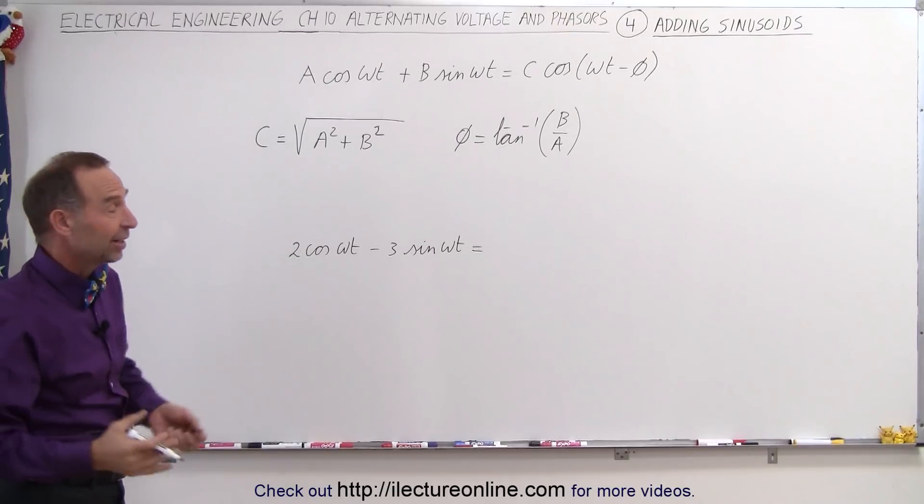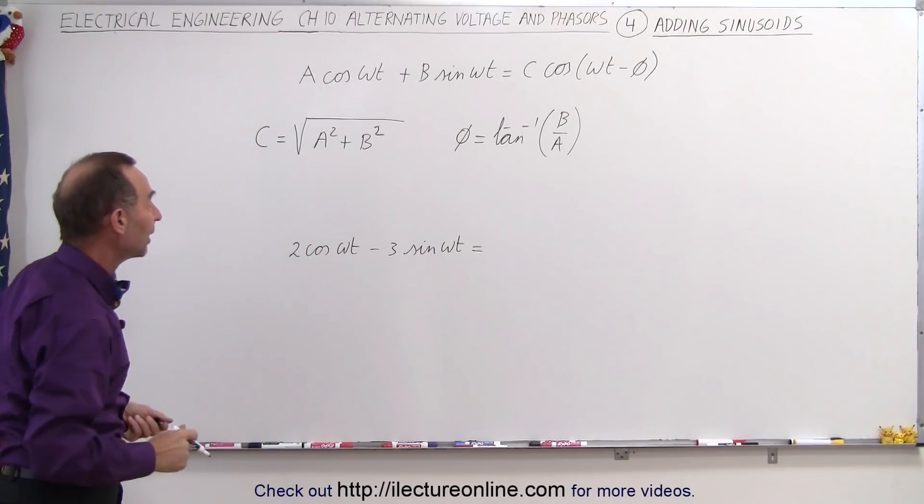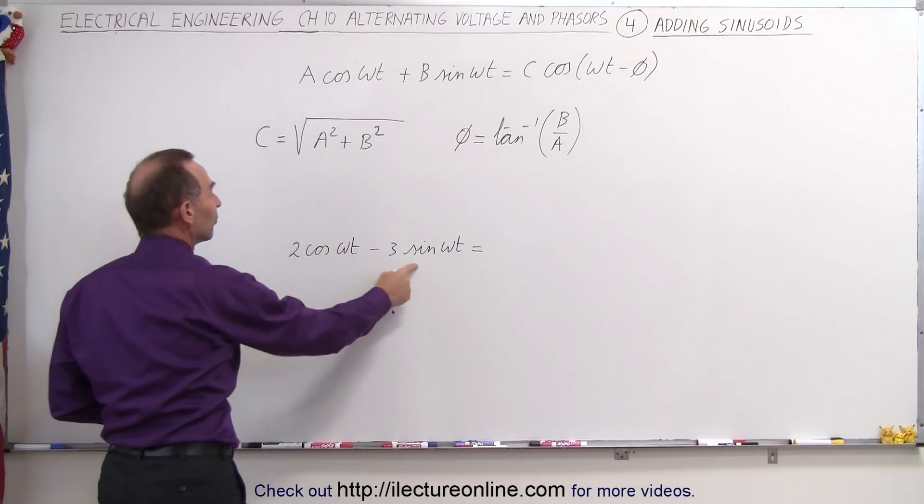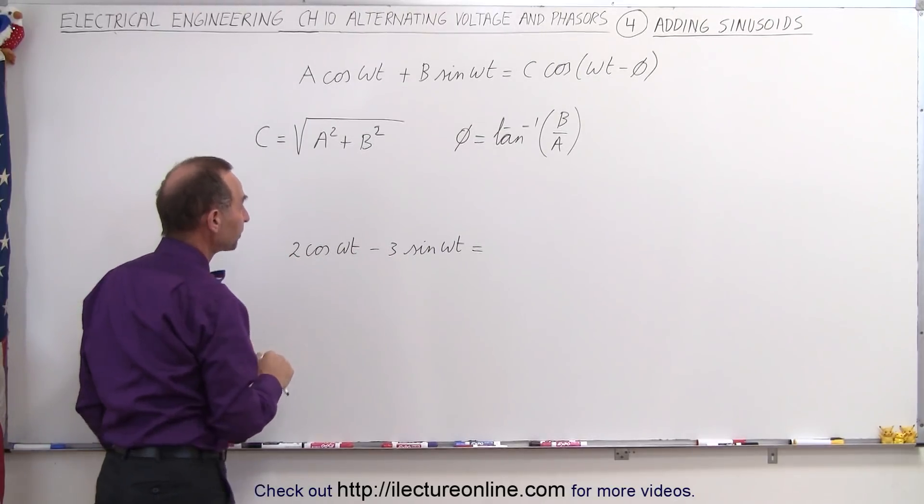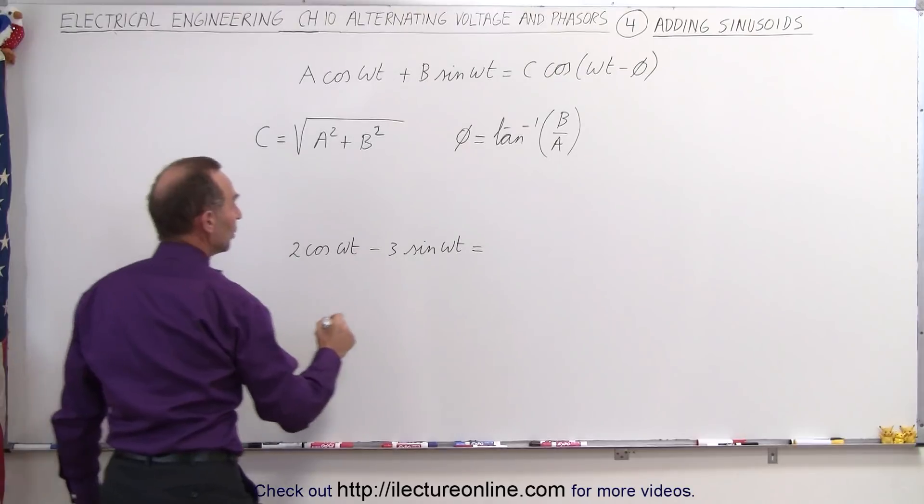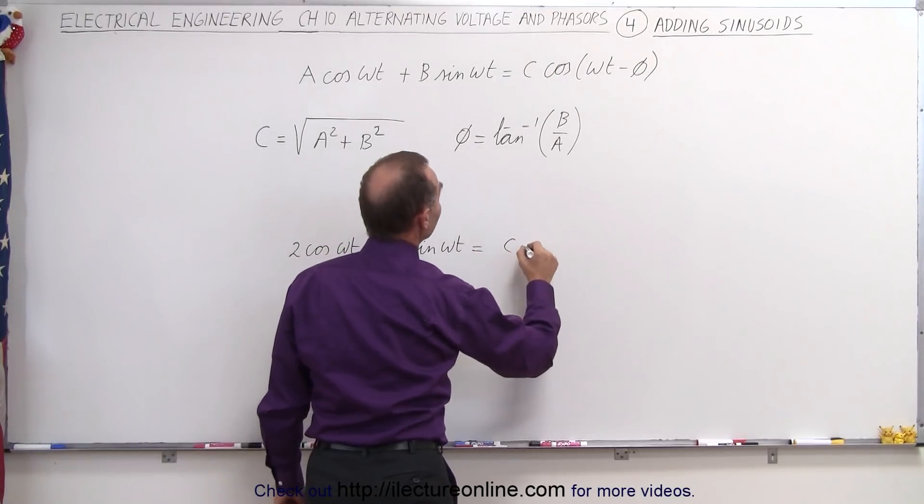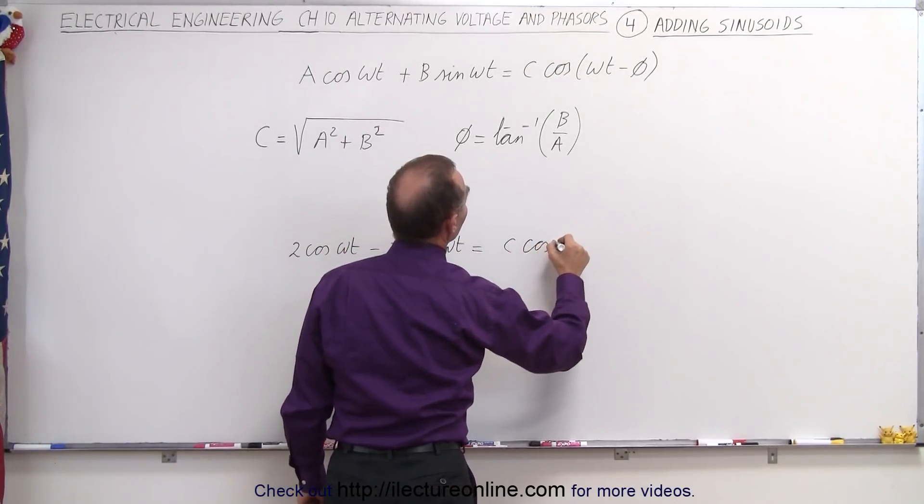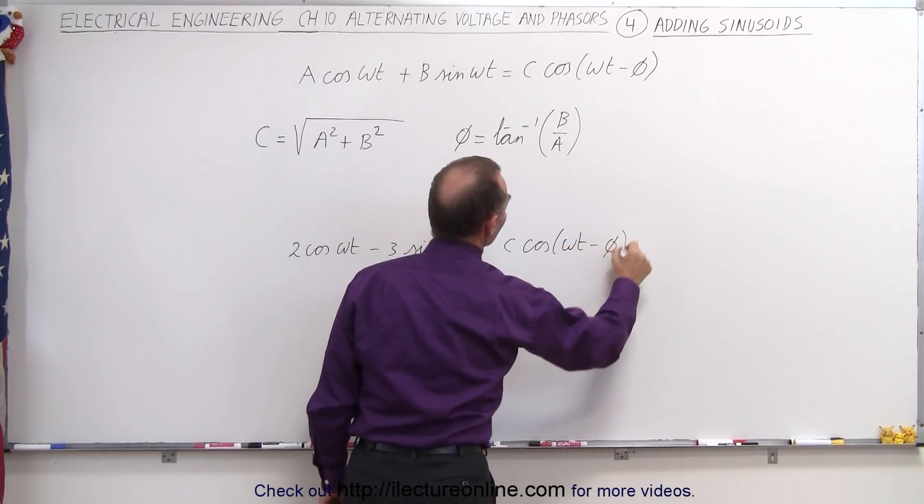So as an example, because nothing like a good example to show you how to apply that, let's go ahead and add these two functions together. Notice that A and B are not the same. So in this case, we know that that's going to be equal to C times the cosine of omega t minus the phase angle.